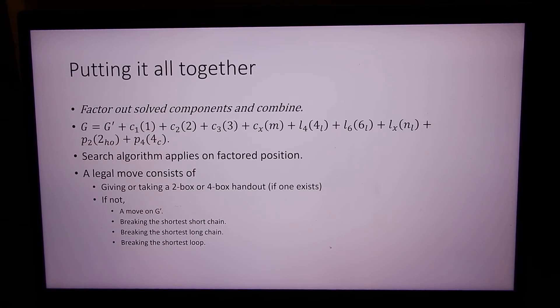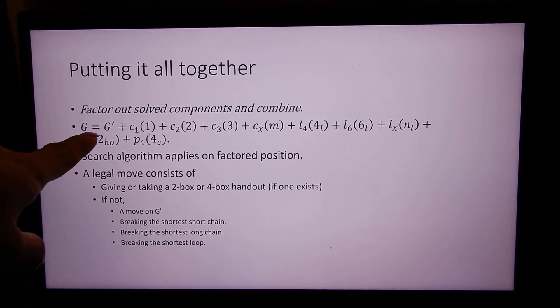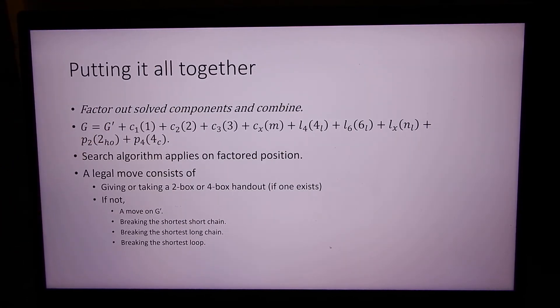So putting it all together, what does that allow us to do? Well, we have a position G, which might have a lot of endgame components, and G prime are the things that are not endgame components.